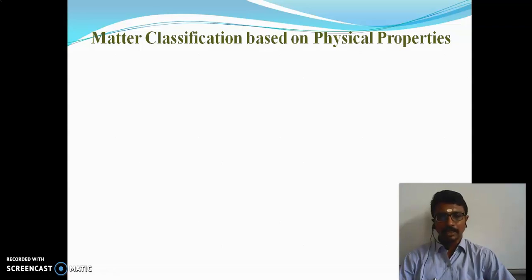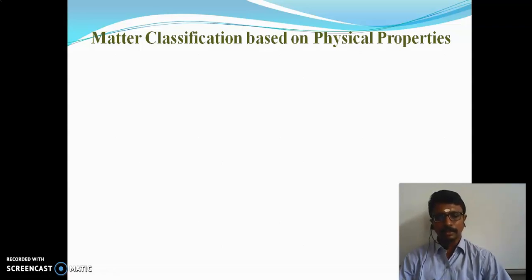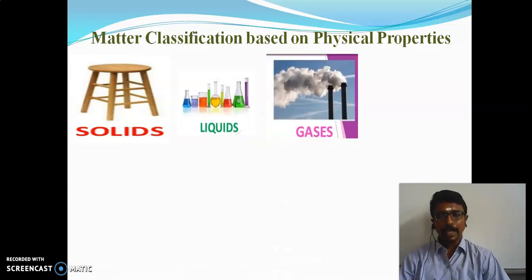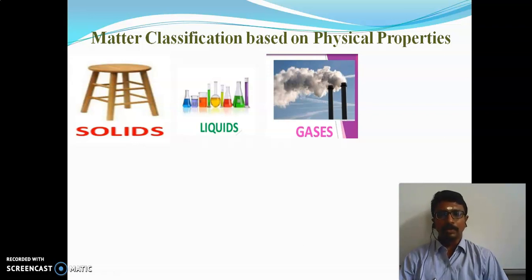Matter can be classified into three main classifications based on physical properties. Can you answer what those are? The first one is solid, the second one is liquid, and the third one is gases. These are the three main classifications of matter on the basis of physical properties.